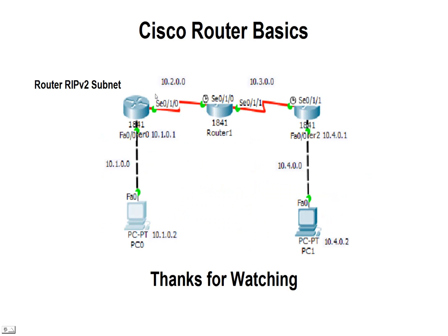Looking at our network, this wouldn't have worked with version 1 of RIP since we've subnetted each one of our networks. Each network is no longer a class A default with only 8 bits for the network — we've added 8 more bits from that second octet to our network address. So now we have 16 bits for the network and 16 for the host. This is subnetted, and it works with RIP version 2.